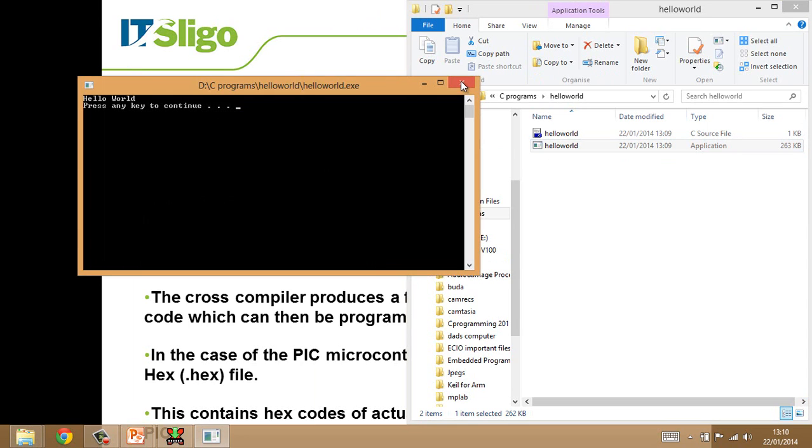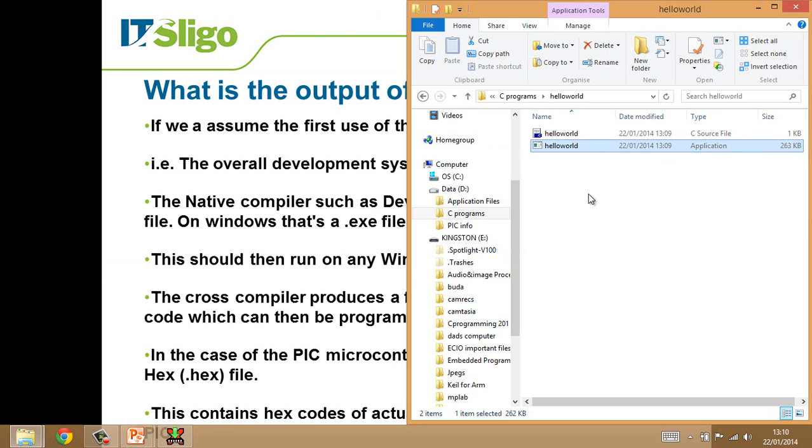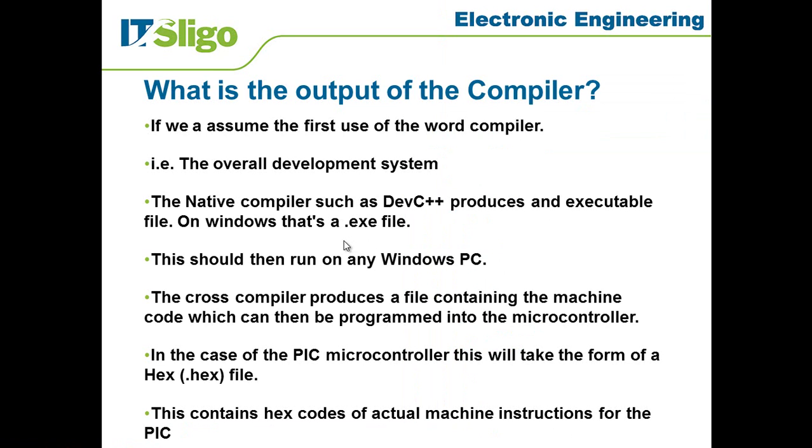In fact, just to prove that to you, I'm going to close down DevC++ at this point and just click the Hello World program, and up it pops. So that's the executable file that's created and that runs on a Windows machine. It should strictly speaking run on another Windows machine as long as it wasn't a different version of Windows, and even if it was, it's still likely to run because it wouldn't rely on anything too specific to any version.